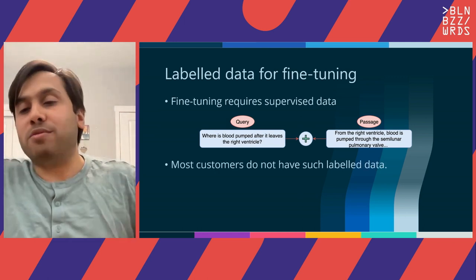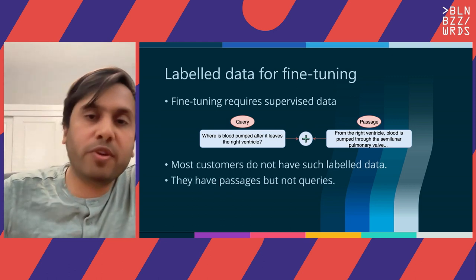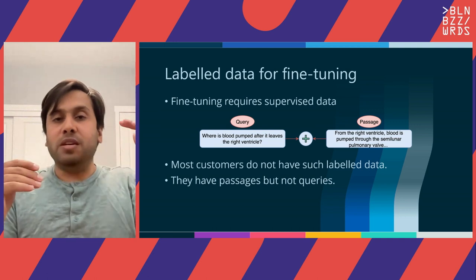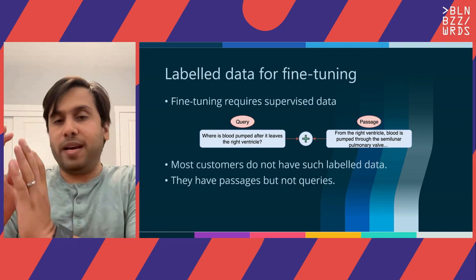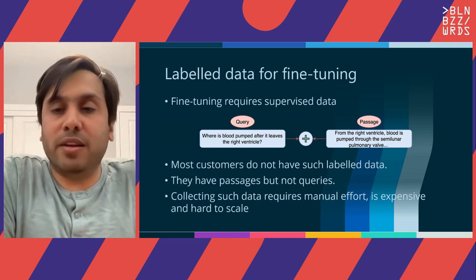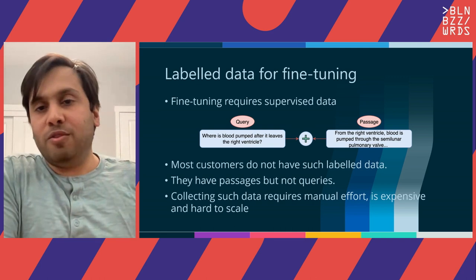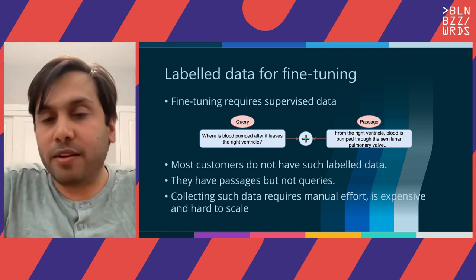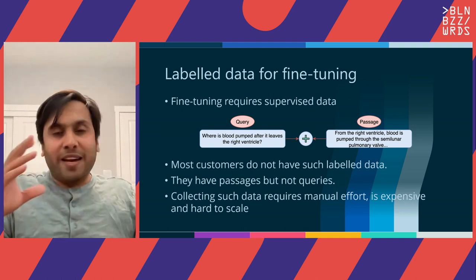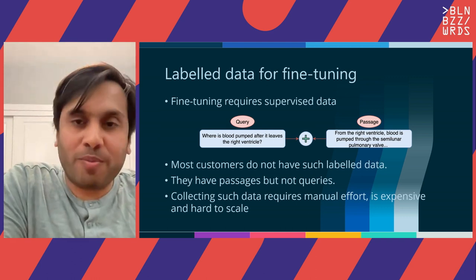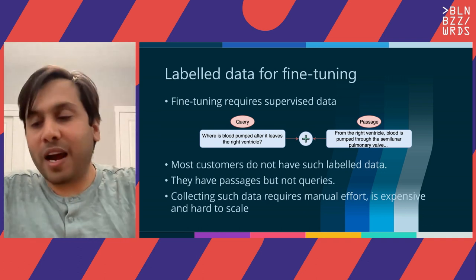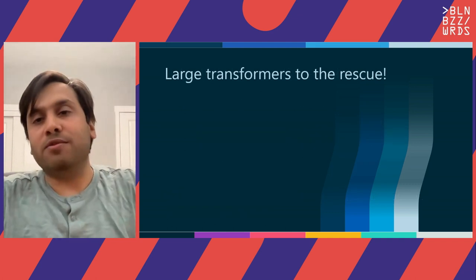Except the issue is that most users do not have such labeled data. We have access to passages but we do not have access to queries. Some users do have queries, but even those don't have the relevancy pairings. One strategy could be to collect such data using manual effort — creating queries given passages, or matching queries and passages — but this requires a lot of manual effort, is expensive, and is hard to scale. But this is where the era of large transformers comes to the rescue: instead of human-generated queries, we can have a large model read passages and create queries.